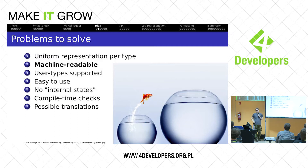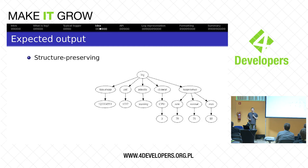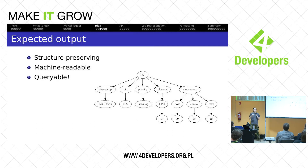So what would be the expected output? First of all, it shall be structured. Whatever we are logging, we should preserve the information. The representation can be just a tree, with different nodes and different values at the leaves representing certain properties. When we have a tree, it's actually very easy to traverse in a machine-processable way, and you can actually query it.